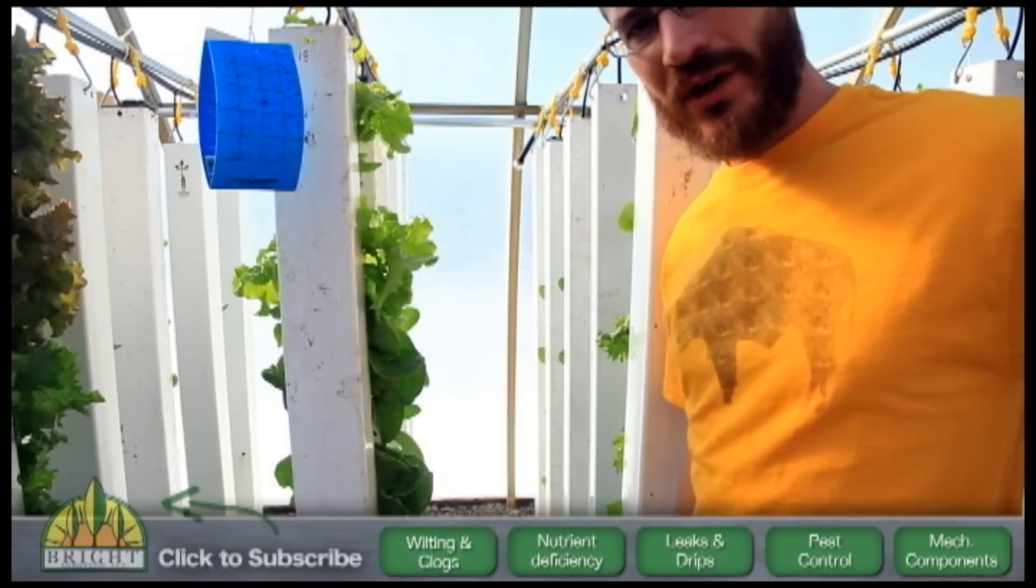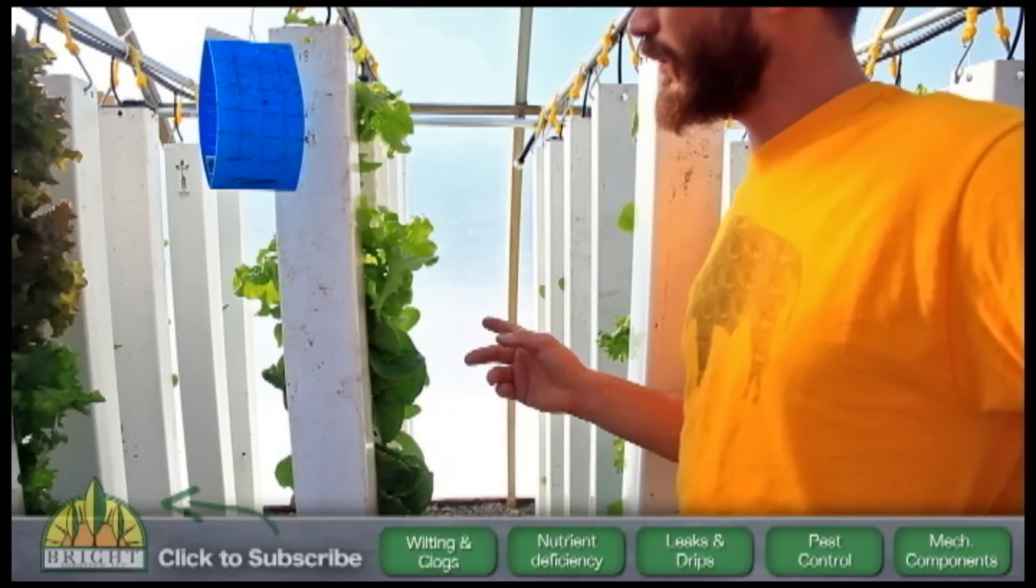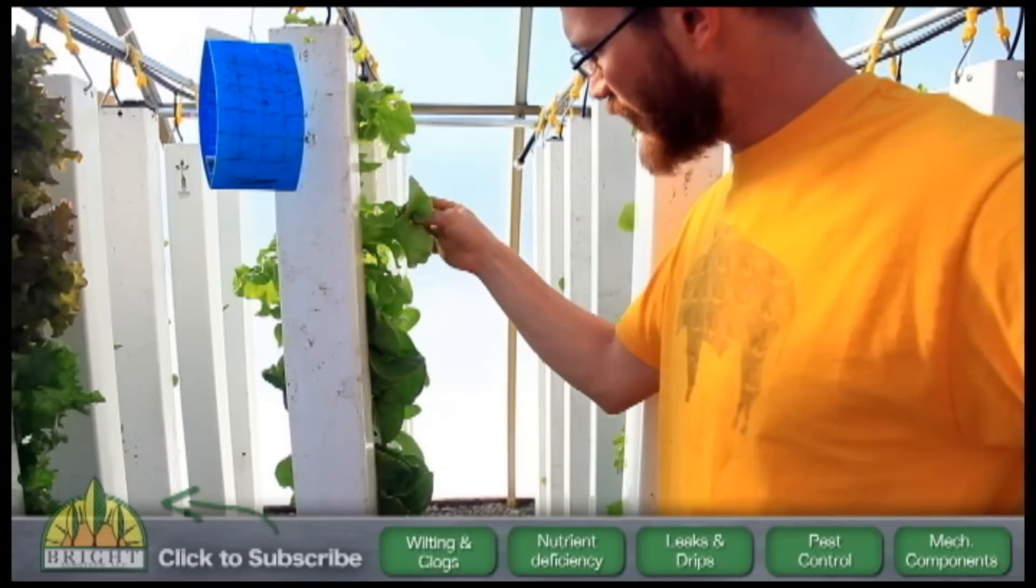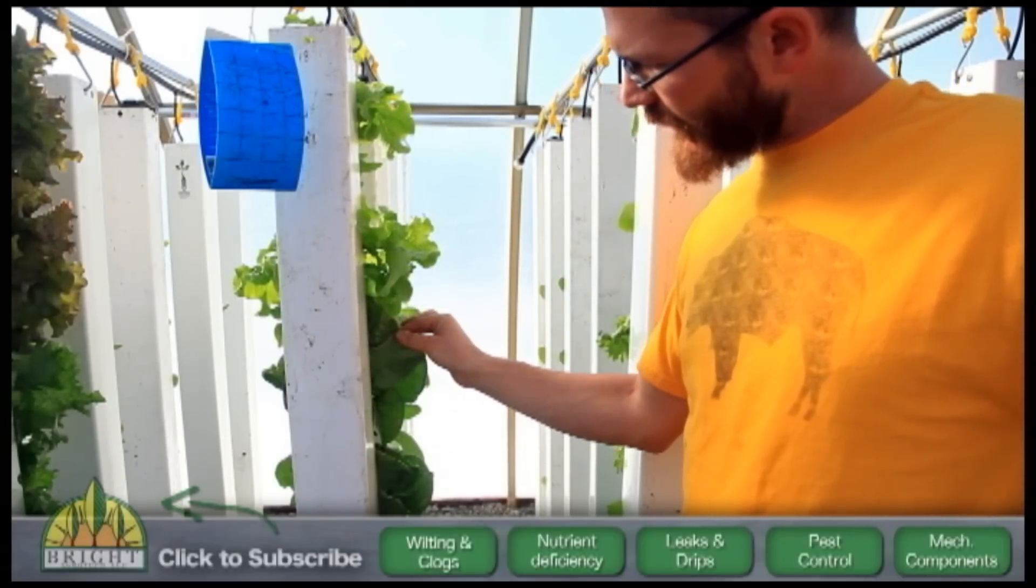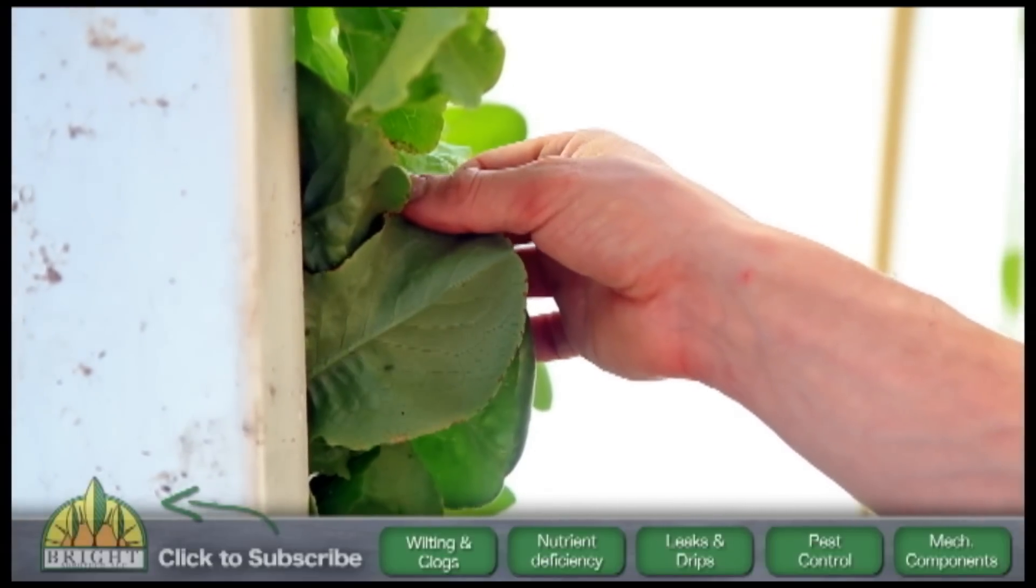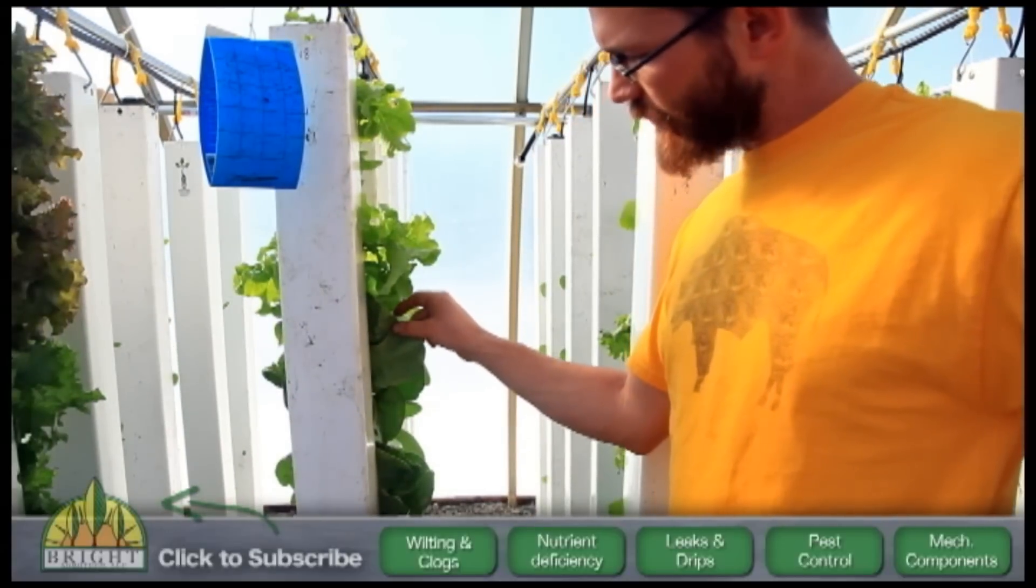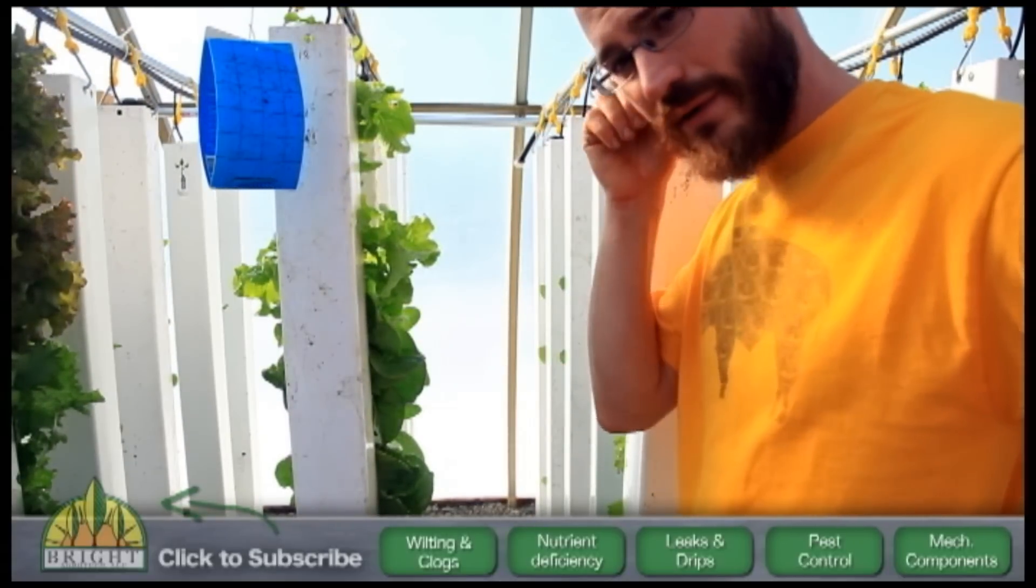So another thing we always check on is insects. So as we're walking our rows, we're always kind of turning over the leaves, looking for different insect pests, primarily in this greenhouse aphids. And here you can see on the bottom of this leaf here, we've got some aphids growing. So we've got maybe seven or eight on the underside of this leaf. And that basically just tells us where we're at with our spraying, how effective we're being.